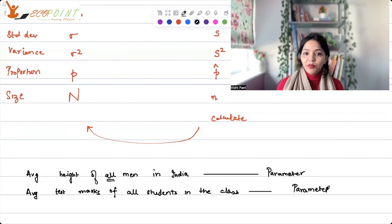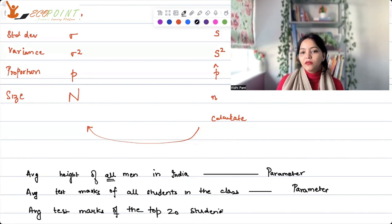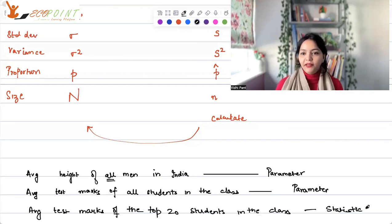Average test marks of all students in the class. Well, that again is a parameter because I've taken it for all. But on the other hand, if I say average test marks of the top 20 students in the class, this would be statistic. That's the difference between sample and population.